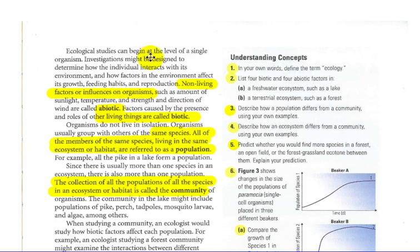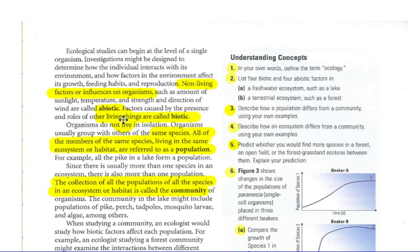Ecological studies can begin at the level of a single organism. Investigations might be designed to determine how the individual interacts with the environment and how factors in the environment affect its growth, feeding habits, and how it reproduces. Non-living factors or influences on organisms — such as sunlight, temperature, and strength and direction of wind — are called abiotic. Factors caused by the presence of living things, such as predators, prey, and other living organisms, are called biotic.